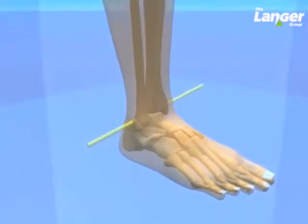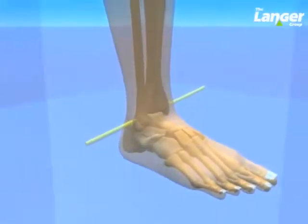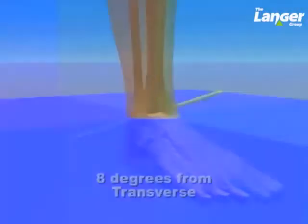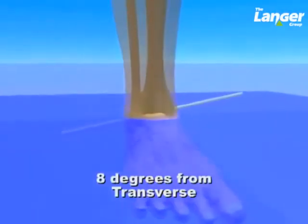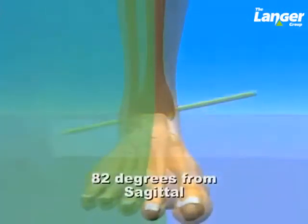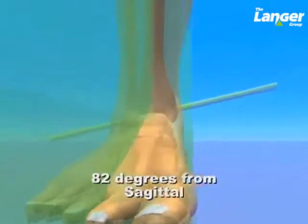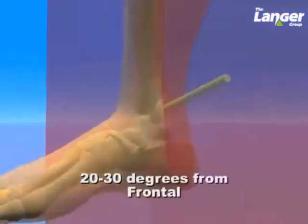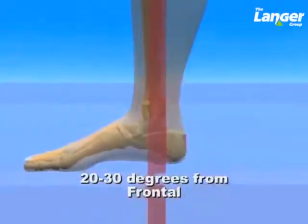The spatial orientation of this joint's axis in relation to the three cardinal body planes is 8 degrees from the transverse plane, 82 degrees from the sagittal plane, and 20 to 30 degrees from the frontal plane.